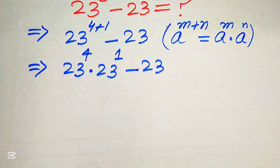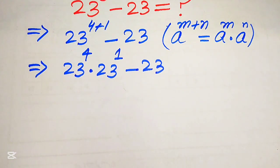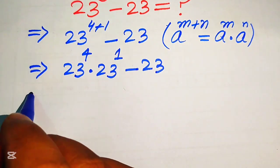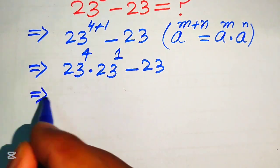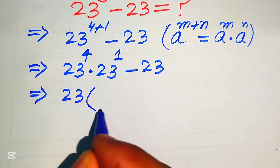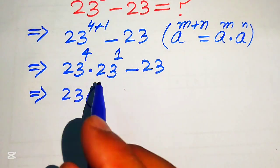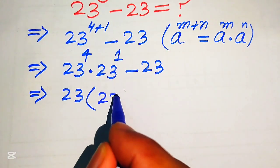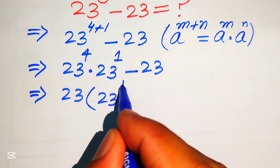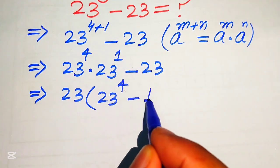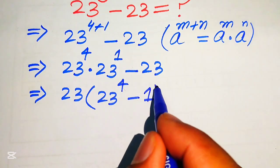Now you see that both of these terms involve 23, so we take 23 as a common factor and we get the remaining terms as 23 to the power of 4 minus 1.